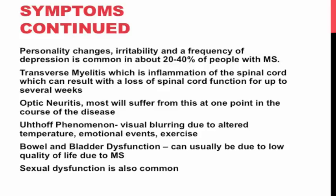There is extreme weakness in the extremities, visual loss, pain upon eye movement, and dark patches in the visual field. Another severe symptom is transverse myelitis — an inflammation of the spinal cord which can result in loss of spinal cord function for up to several weeks. Optic neuritis is also common, with visual blurring due to altered temperature, emotional events, or exercise. Many patients also experience bowel and bladder dysfunction, as well as sexual dysfunction, due to MS damaging the nerve pathways responsible for sexual response, including arousal and orgasm — further complicated by fatigue, spastic muscles, and psychological factors like depression.